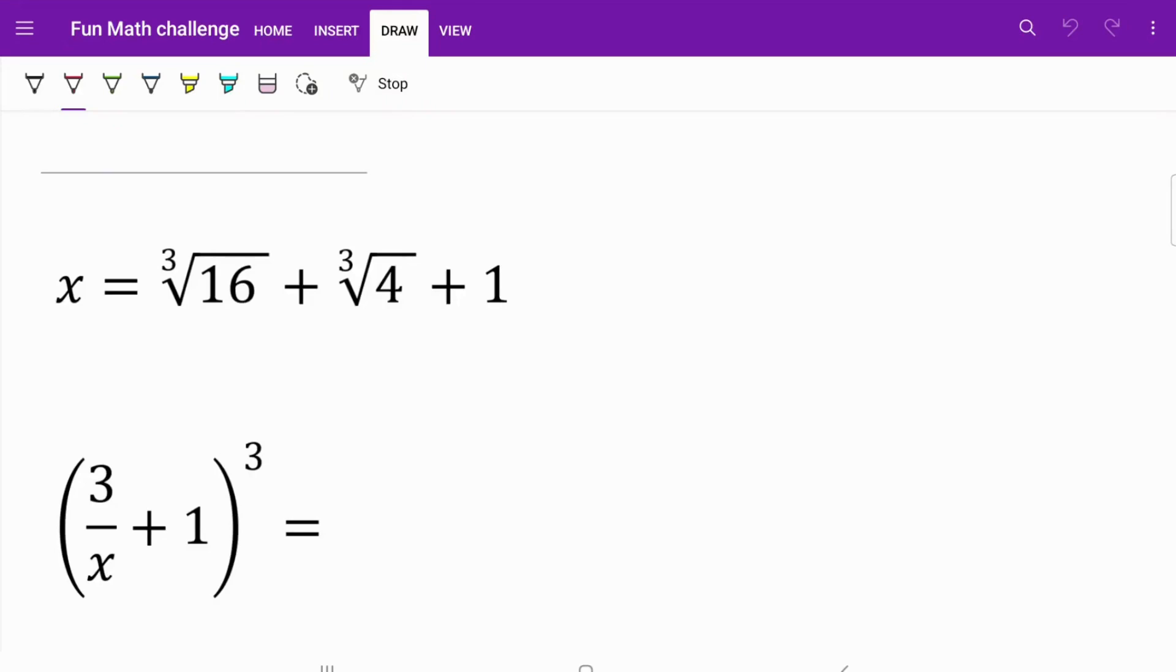We're given x equals the cube root of 16 plus the cube root of 4 plus 1. In turn, we have to find the sum of 3 over x plus 1, cubed.